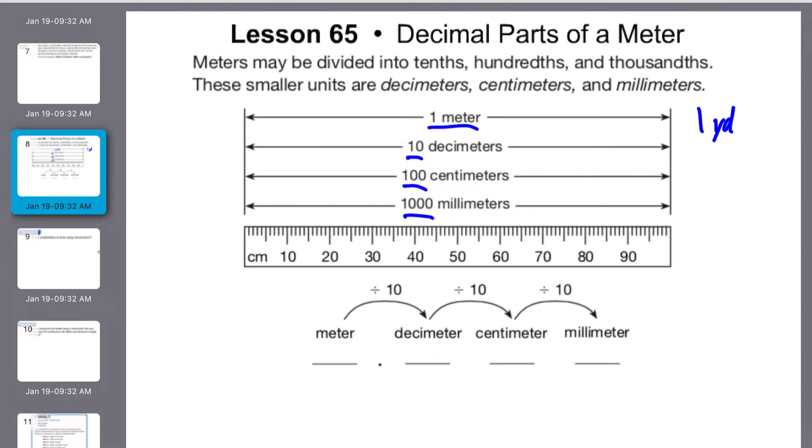On your ruler at home you should have teeny tiny little marks. Those would each be millimeters. The next largest would be centimeters, and then every ten would be a decimeter, and then finally have one meter.